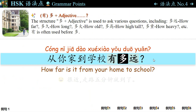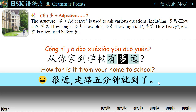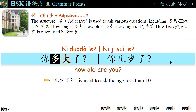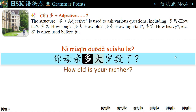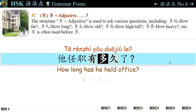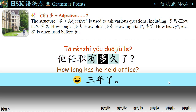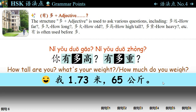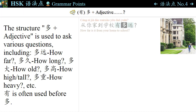语法点四: The structure 多 + Adjective is used to ask various questions. For example: 从你家到学校有多远? — How far is it from your home to school? — 很近，走路五分钟就到了。 你多大了? — How old are you? Or you can ask, 你几岁了? — 几岁了 is used to ask the age of someone less than 10. 你母亲多大岁数了? — How old is your mother? 您多大年纪了? 她任职有多久了? — How long has she held office? — 三年了。 你有多高? 有多重? The pattern is: 有多 + Adjective.